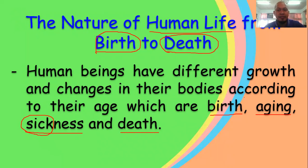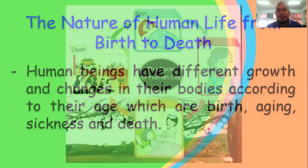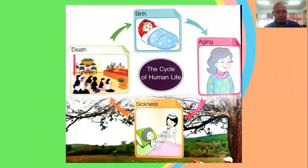The human life cycle has four stages: first, birth; second, aging; third, sickness; and fourth, death. Now students, let's watch the graph — the cycle of human life.